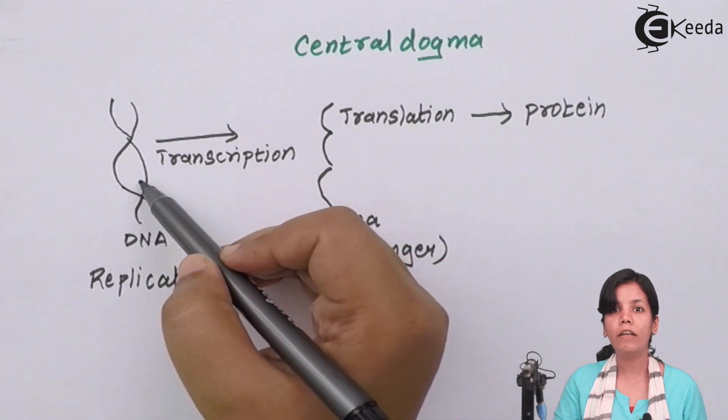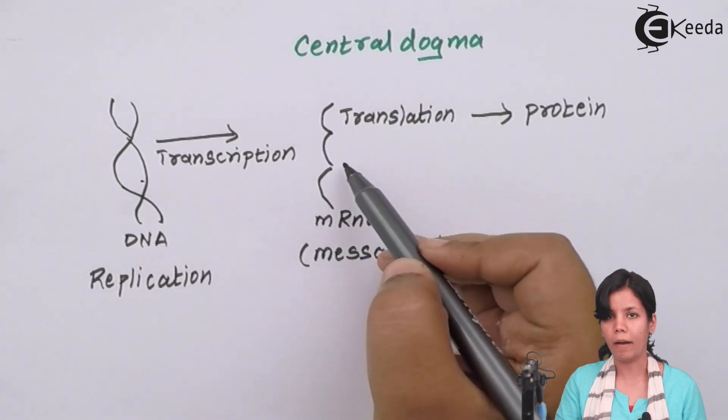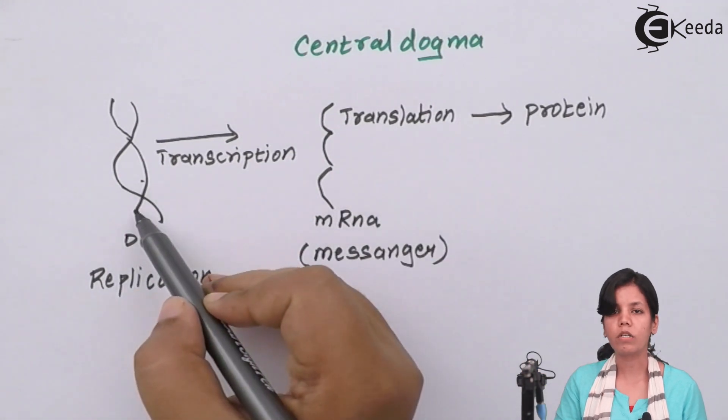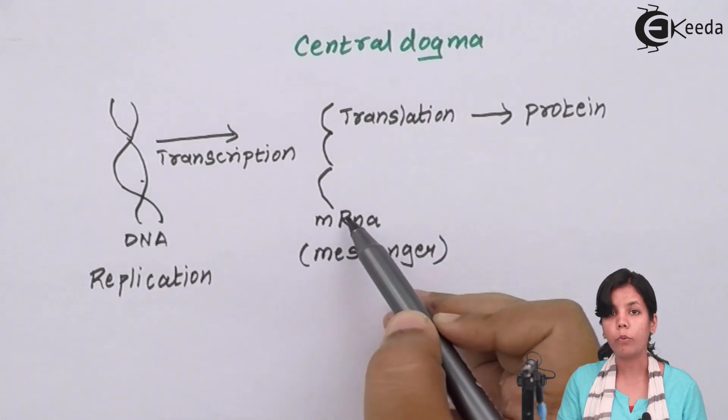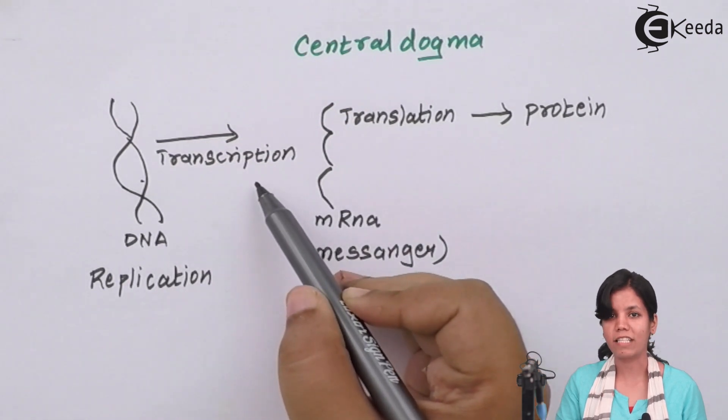When I say transcription, the information which is present as coded language on DNA is copied on mRNA. DNA which was double stranded is converted into mRNA which is single stranded and this process is called transcription.